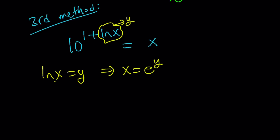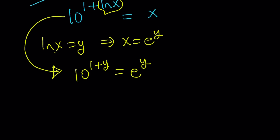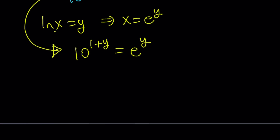So by replacing ln x with y, we get 10 to the power 1 plus y equals x, which can be written as e to the power y. In other words, we get rid of the logarithm and this turns into a purely exponential equation. Now 10 to the power 1 plus y can be written as 10 times 10 to the power y equals e to the power y.